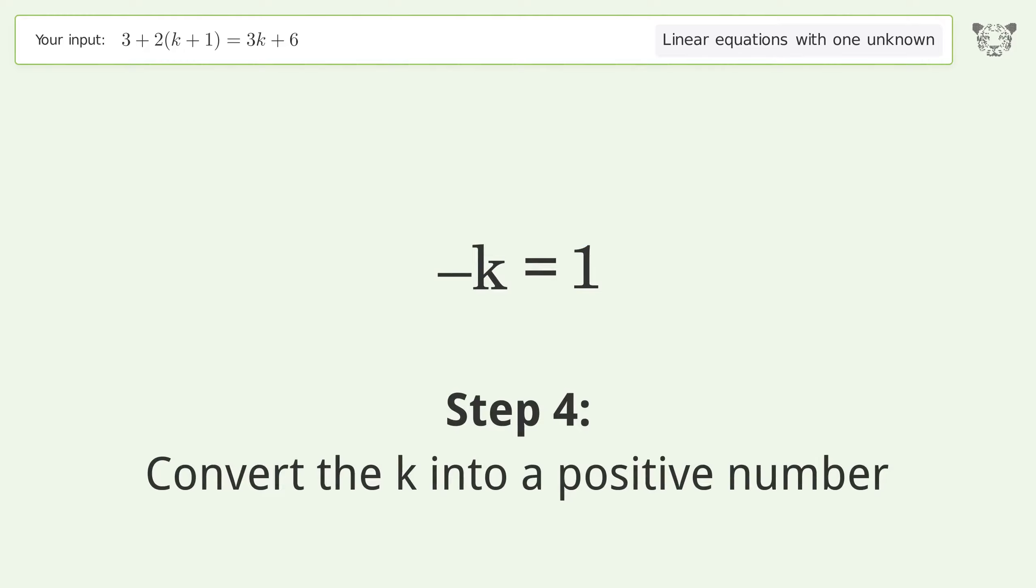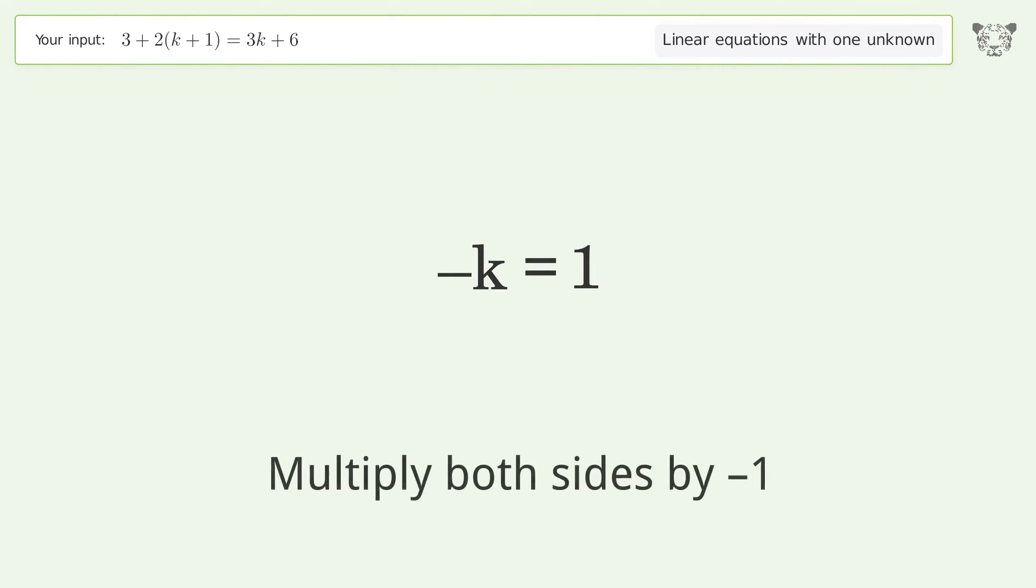Convert the k into a positive number. Multiply both sides by negative 1. Remove the 1s. And so the final result is k equals negative 1.